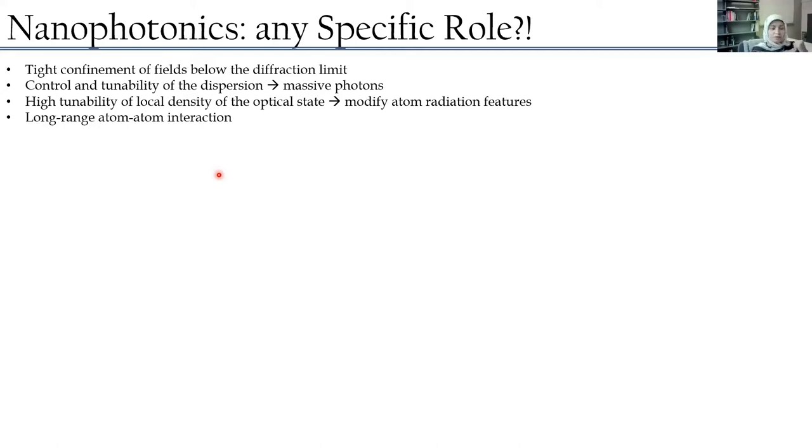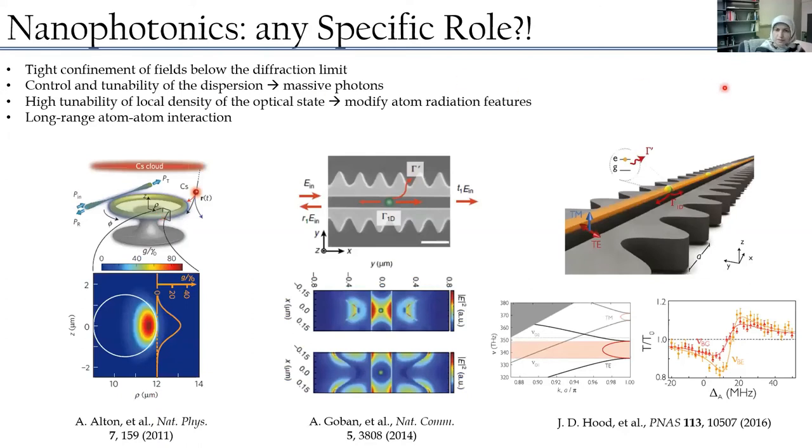We kind of heard interesting talks about the engineering of the dispersion, which is more manageable in nanophotonics structures. For example, we can have a kind of singularity close to the band gap and we could have also other band engineering by basically spatially changing the structure. We could also have high tunability of the local density of optical states, which simply means that we can control the Purcell enhancement, we can control the coupling of the emitter to the bath and control the ratio between coherent and decoherent phenomena. And of course we can have long range atom-atom interaction mediated by the structures.